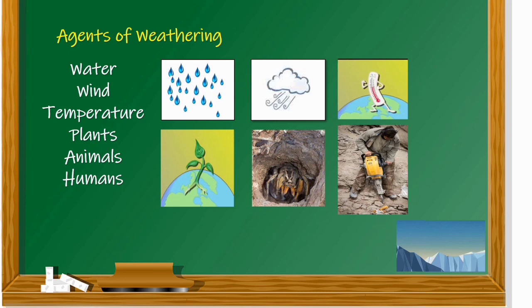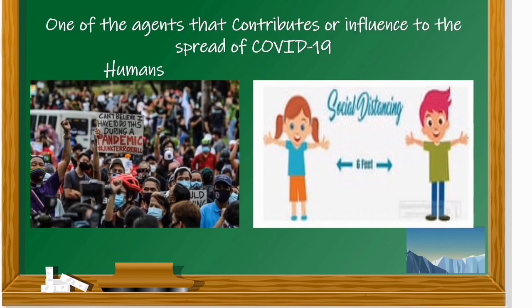Again, what are the agents of weathering? The agents of weathering are water, wind, temperature, plants, animals, and humans. Among these agents of weathering, which of them contributes or has an influence related to the pandemic that we are facing today? Humans. Humans contribute to the spread of disease because of not following safety protocols. So we should follow the protocols like social distancing.